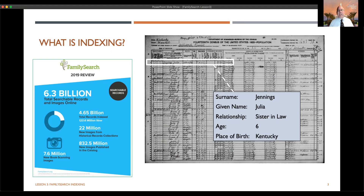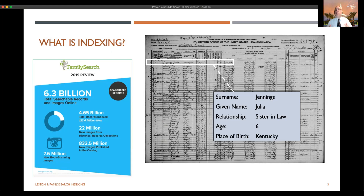Why do we call it indexing? Indexes are specific search keys used to find information in databases. We don't put all of the information in from a record — we put in key information that people may be searching for, or that needs to be recalled quickly as part of a search. That's the database-level root of what indexing means to us today.